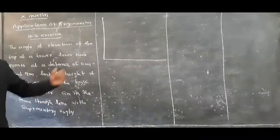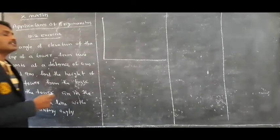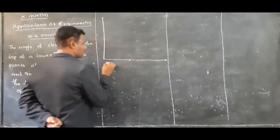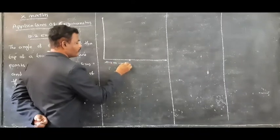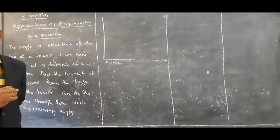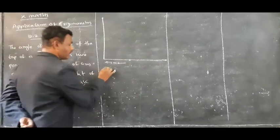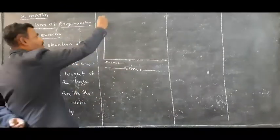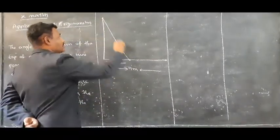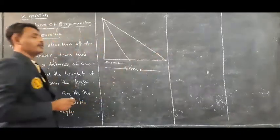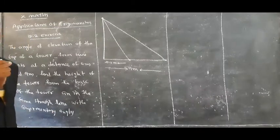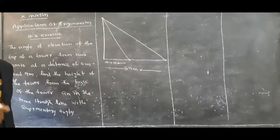To the base of the tower, one straight line is there, and on the straight line two points are there. One point is maintaining 4 meters distance from the base of the tower, and the second one is at 9 meters from the base of the tower. The angular elevations of the two points are complementary angles. The sum of two complementary angles is equal to 90 degrees.